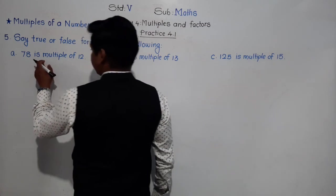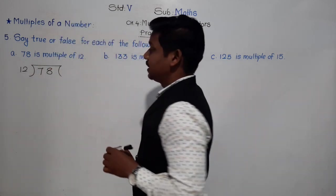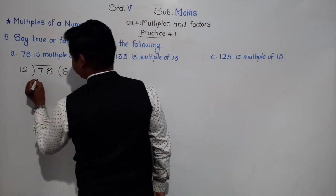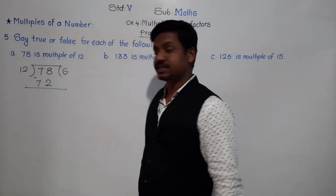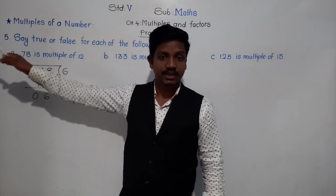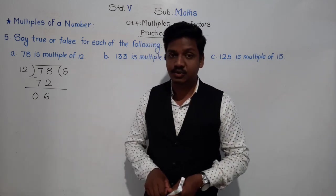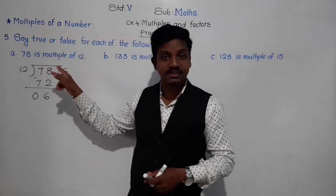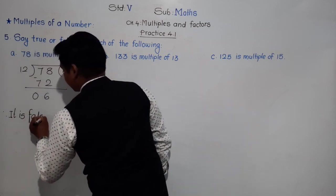We divide 78 by 12. 12×6=72, which is the largest multiple of 12 smaller than 78. 78 minus 72 = 6, so the remainder is 6. Since 78 is not divisible by 12, it is not a multiple of 12. Therefore, the statement '78 is a multiple of 12' is false.